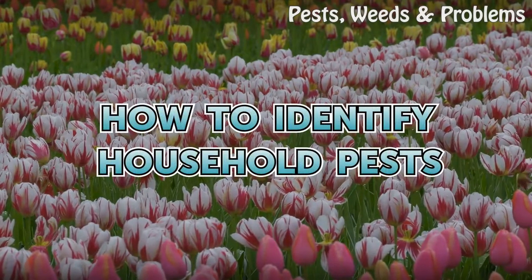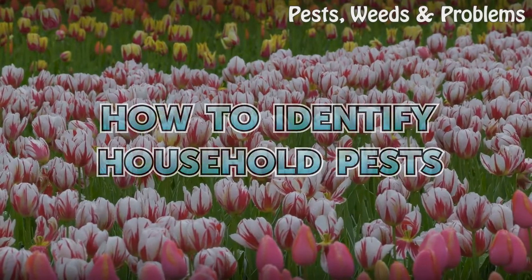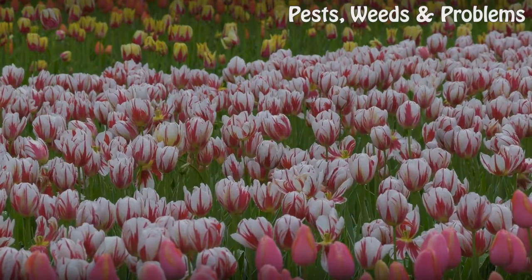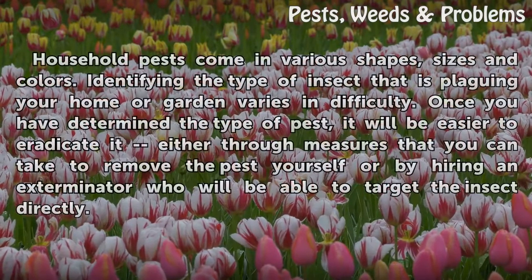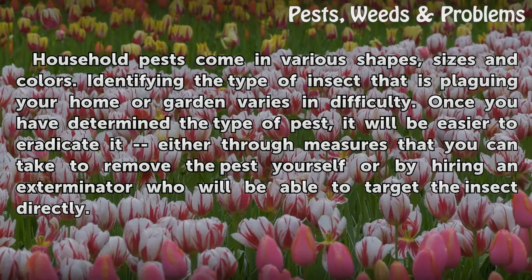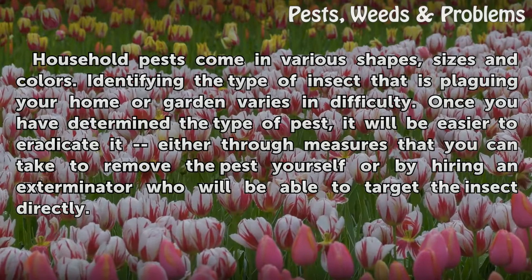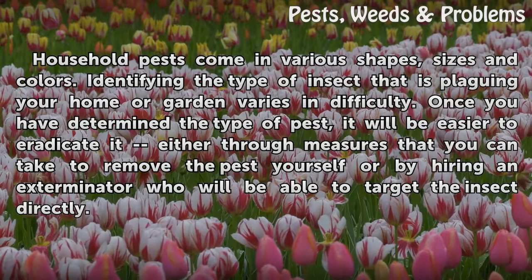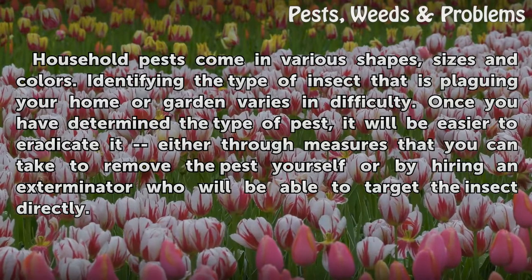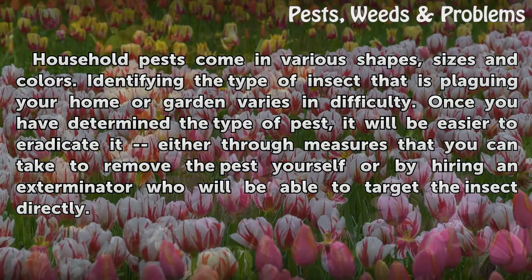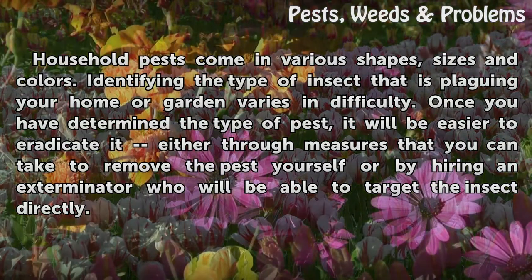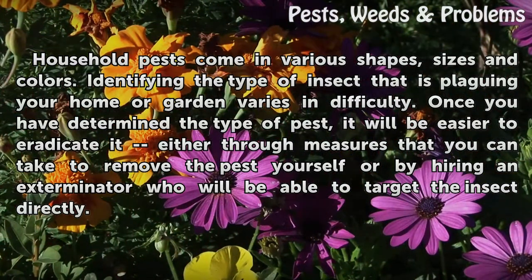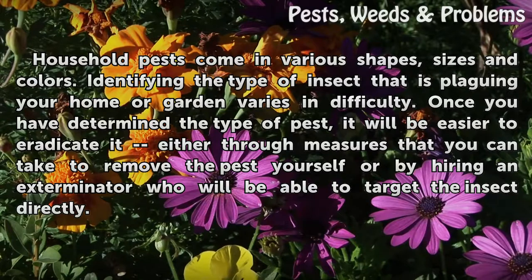How to Identify Household Pests. Household pests come in various shapes, sizes and colors. Identifying the type of insect that is plaguing your home or garden varies in difficulty. Once you have determined the type of pest, it will be easier to eradicate it either through measures that you can take to remove the pest yourself or by hiring an exterminator who will be able to target the insect directly.